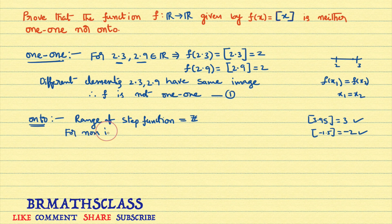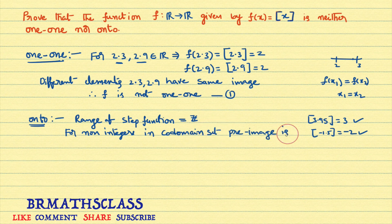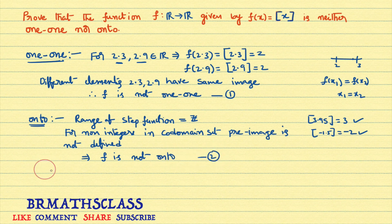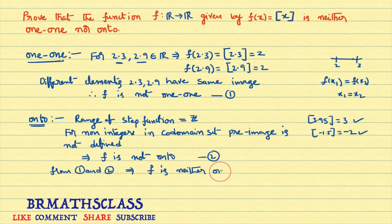For non-integers in the codomain, preimage is not defined. Since there exist elements in the codomain for which no preimage exists, the function is not onto. Combining both results, f is neither one-one nor onto. We have proved that the given function is neither one-one nor onto.